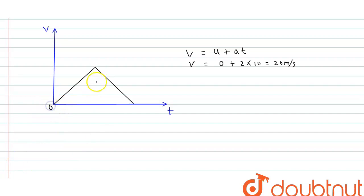This is t equals 0, this is t equals 10 seconds, and this is t equals 20 seconds. At t equals 10 seconds, velocity is maximum at 20 meters per second.